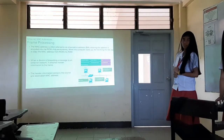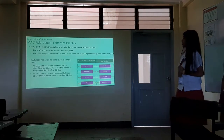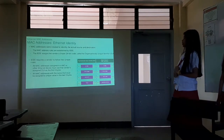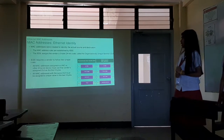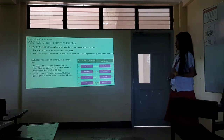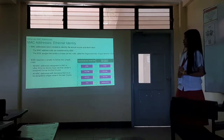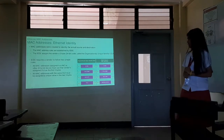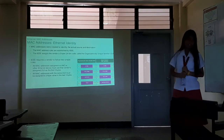The IEEE assigns a vendor a 3-byte, 24-bit value called the Organizationally Unique Identifier or OUI. IEEE requires a vendor to follow two simple rules: all MAC addresses assigned to a NIC or other Ethernet device must use the vendor's assigned OUI as the first three bytes. All MAC addresses with the same OUI must be assigned a unique value in the last three bytes.